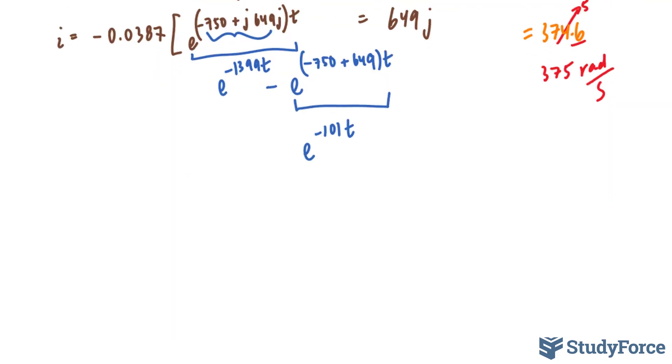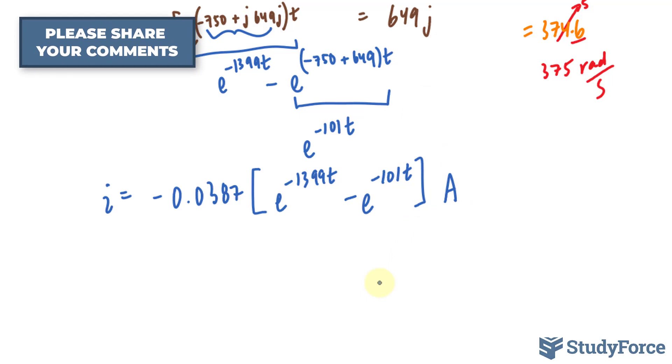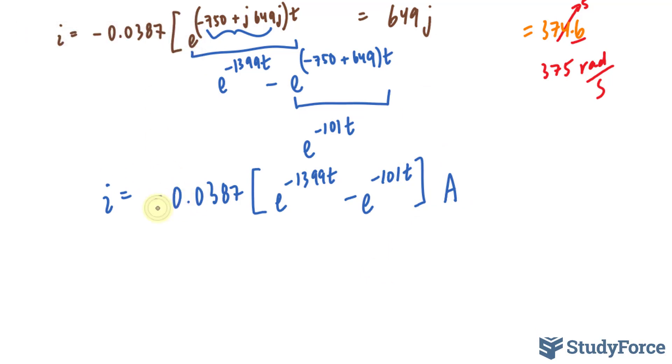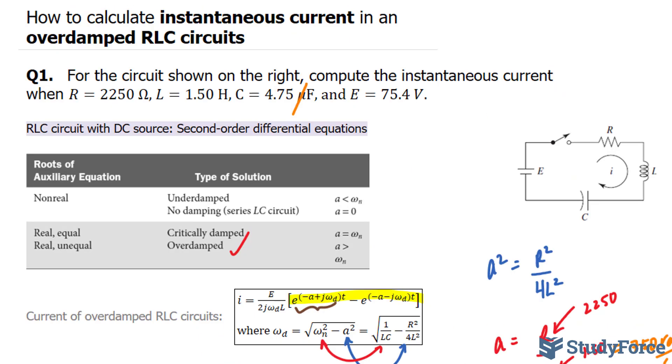Let's put this all together. It's getting confusing. We have i is equal to negative 0.0387 square bracket. E to the power of negative 1,399t minus e to the power of negative 101t and the units here are in amperes. Now, if you want to make this look nicer and you don't want small numbers at the front, you can convert it into milliamps. If you do convert it into milliamps, this becomes negative 38.7 times this exact same expression. And interestingly, if you plot this equation, you'll end up with a curve that looks like this. This is what the current in overdamped RLC circuits look like. And there you have it. That is how to calculate instantaneous current in an overdamped RLC circuit.